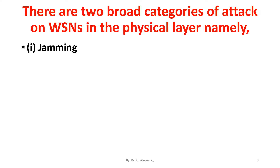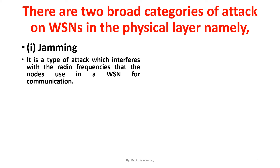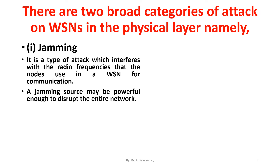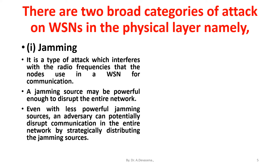Jamming is a type of attack which interferes with the radio frequencies that the nodes use in a wireless sensor network for communication. A jamming source may be powerful enough to disrupt the entire network. Even with less powerful jamming sources, an adversary can potentially disrupt communication in the entire network by strategically distributing the jamming sources.